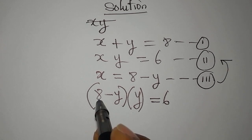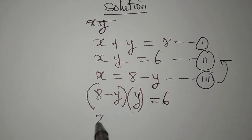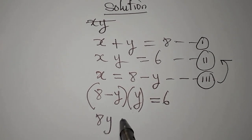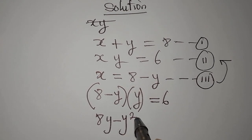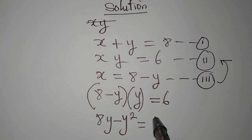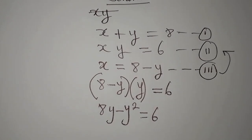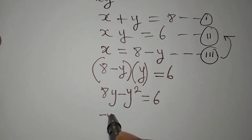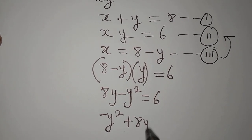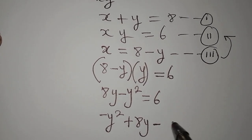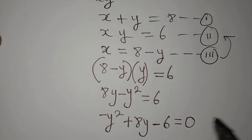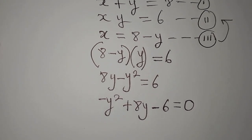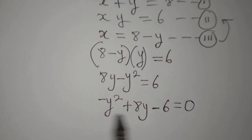Open the bracket so that we have 8 times y, that is 8y. Then minus y times y, that is y squared. This is equal to 6. Now, we write minus y squared first. This is plus 8y. And then bring this to the left. It becomes minus 6. And then we equate it to 0. And this is going to give us a quadratic equation. In fact, this is already a quadratic equation.